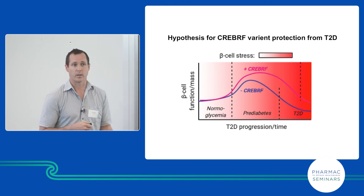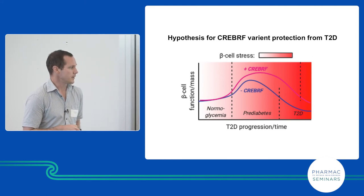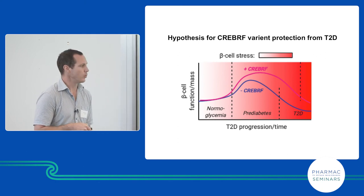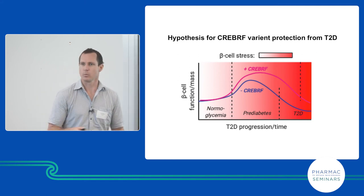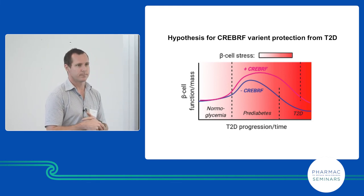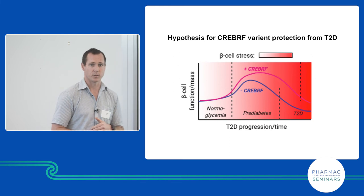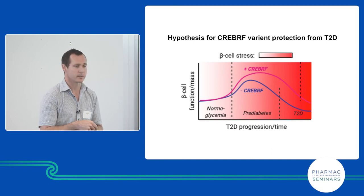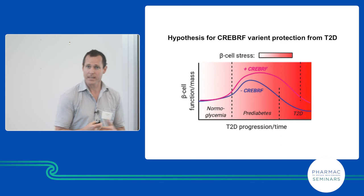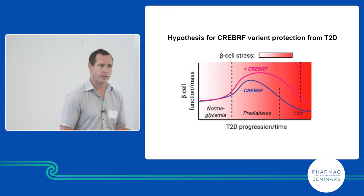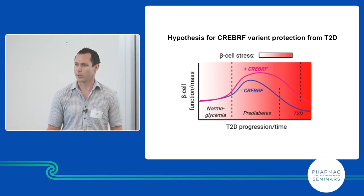Our hypothesis is that when you're normoglycemic, your beta cell function is really good. But when you go into the progression of prediabetes and diabetes, your pancreas has to work harder to lower blood glucose levels, increasing insulin release until at some point this decreases — around the transition point to type 2 diabetes. We think people with the CREB3RF variant are able to prolong their beta cell function, and this gives us new targets for type 2 diabetes management. This is still a hypothesis and we don't have a lot of evidence to support it yet — that's what we're working towards.